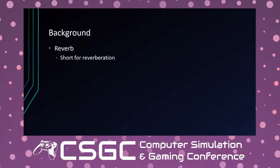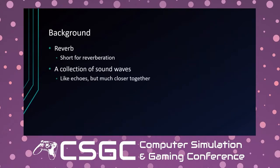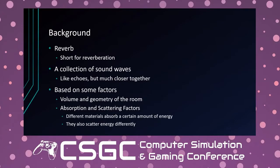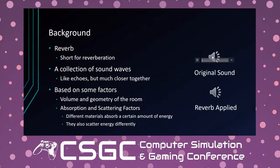Reverb is short for reverberation — it's a collection of sound waves, like echoes that are very close together so you don't really hear them individually as you would with an echo. It's based on factors such as the volume and geometry of the room, including anything inside the room, as well as absorption and scattering factors — different materials absorb and scatter energy differently. Here's the original sound, and here's that sound with reverb applied. The second piano sounds like it's in a fairly large or highly reflective room.